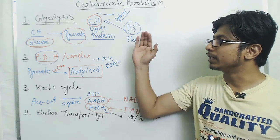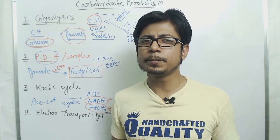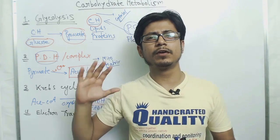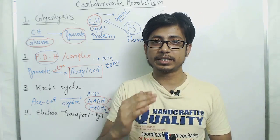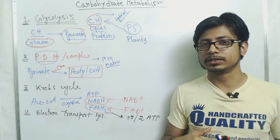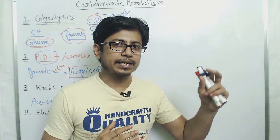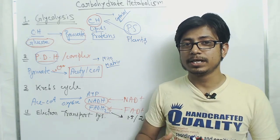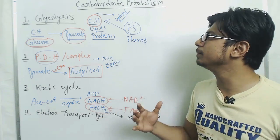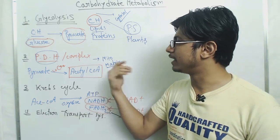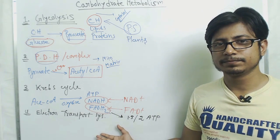We will cover the regulation of glycolysis, Krebs cycle, PDH, and electron transport chain — an overview of regulation of carbohydrate metabolism. The second part of the video will explain exactly how each of the processes are regulated. The regulation processes are mostly similar between glycolysis, Krebs cycle, and pyruvate dehydrogenase complex.